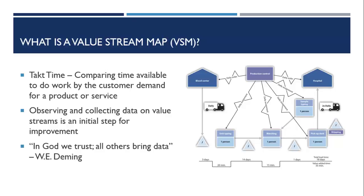Over time, process conditions may change and inconsistencies or problems with metrics may remain unchanged, treated as norms, or even noticed and create the as-is established baselines of performance. Observing and collecting data on the value streams is typically one of the initial steps for improvement efforts. You may have heard the quote by W. Edwards Deming: 'In God we trust; all others bring data.'